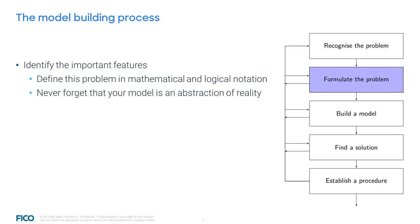The next step consists of identifying the important features, which means formulating the problem in mathematical notation. Hence, we define variables, write down equations on the blackboard, find a mistake, wipe the blackboard and repeat. We do what we know from our studies — we describe the problem using the language of mathematics.